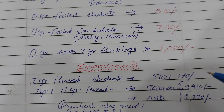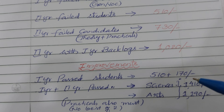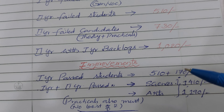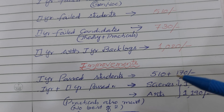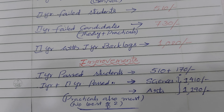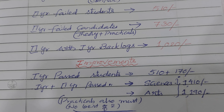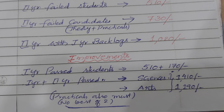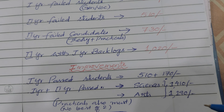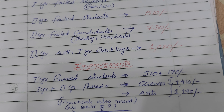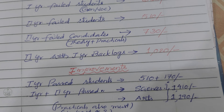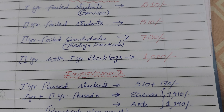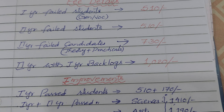Best of two option is only available for first year improvement. If you are a first year student who has passed all subjects but feels you scored less marks in any subject, you can write the improvement exam. You can also go for re-verification. Re-counting costs 300 rupees and re-verification costs 600 rupees. Re-verification is the better option.